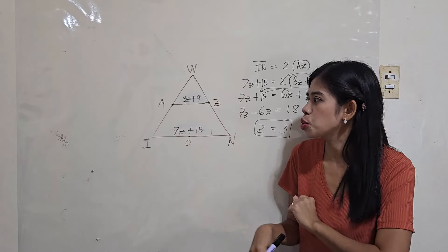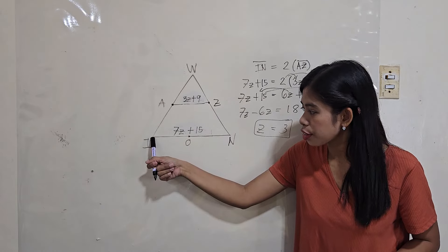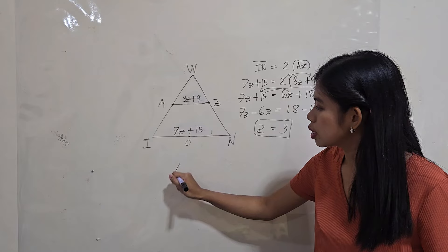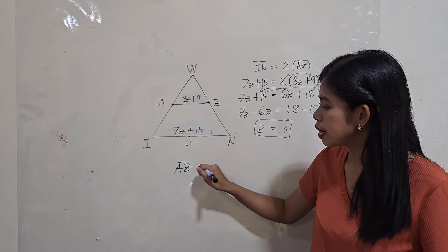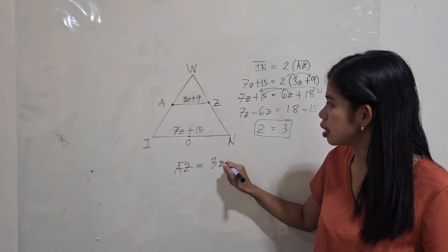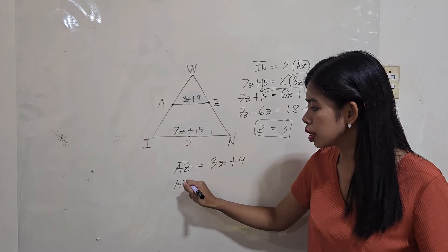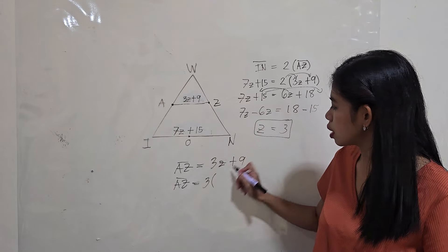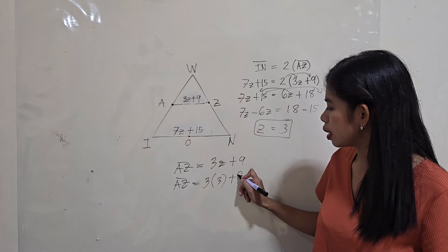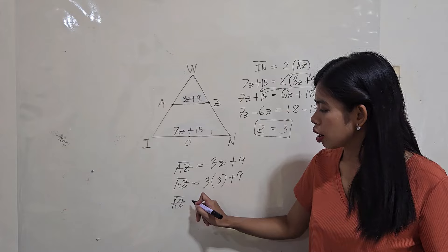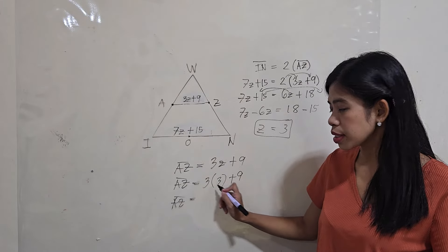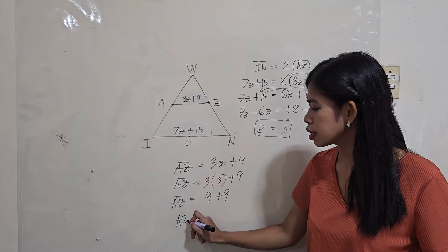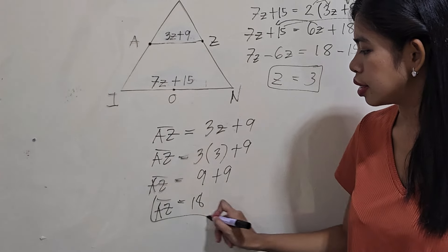Now, what is the measure of midline AZ and third side IN if the value of z is 3? Let's try. So, let's try first the measure of midline AZ. So, that's 3z + 9. All we have to do is to substitute. So, 3 times the value of z. That's 3 plus 9. So, the measure of midline AZ is 3 times 3. So, that's 9 plus 9. So, that would give us 18, 18 units.